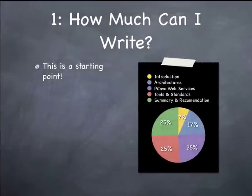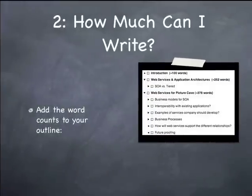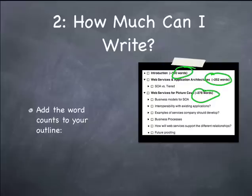That gives you something that sort of looks like this. Notice that the percentages aren't exactly the same, but it does add up correctly because it includes the introduction. So add your word counts to your outline, and you can see on the right-hand side that I've added word counts so that I know how many words to target for each section.